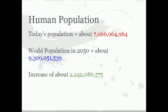Today's population is about 7,066,964,964. The world population in 2050 will be about 9,309,051,539. The increase will be about 2,242,086,575.